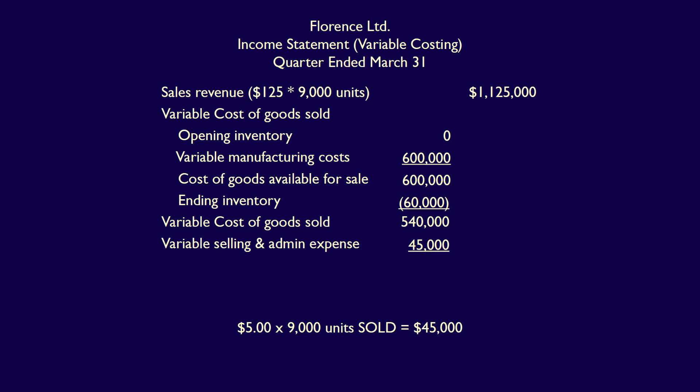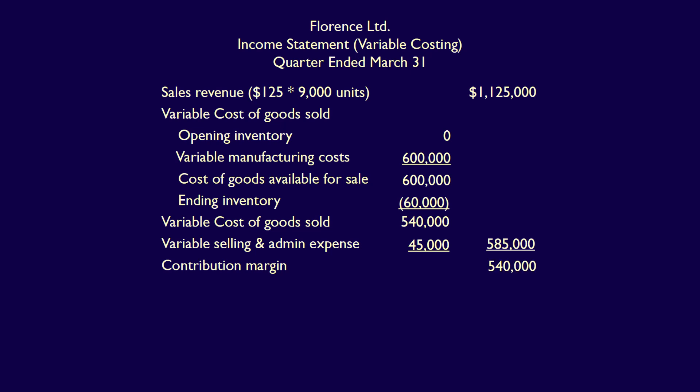Since this is a variable costing income statement, we also include the variable selling and admin expenses, calculated as 9,000 units sold multiplied by $5, which equals $45,000. Total variable costs are the variable cost of goods sold of $540,000 plus variable selling and admin expense of $45,000, equaling total variable costs of $585,000. Next we calculate the contribution margin: sales revenue of $1,125,000 minus total variable costs of $585,000 equals a contribution margin of $540,000.